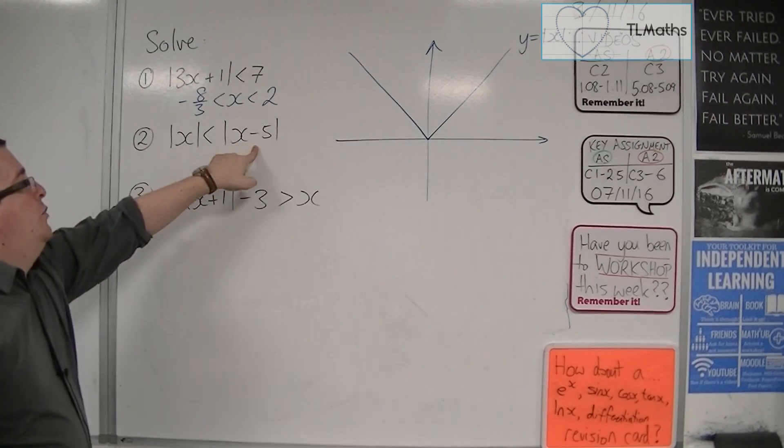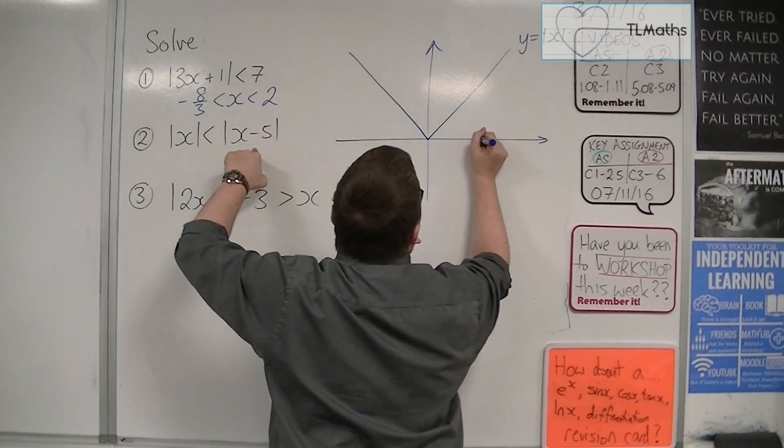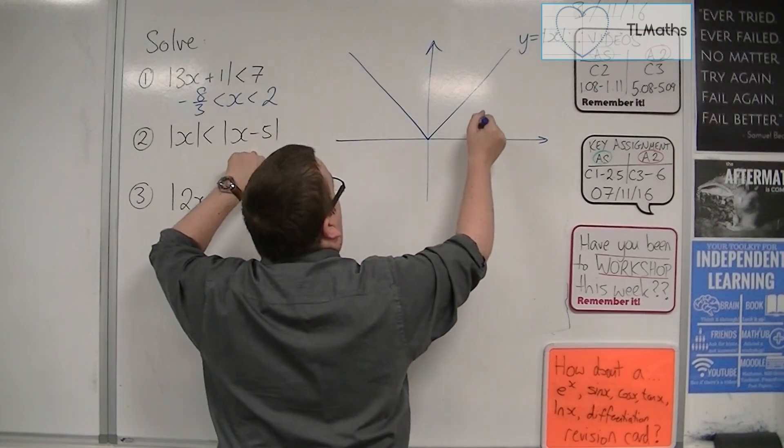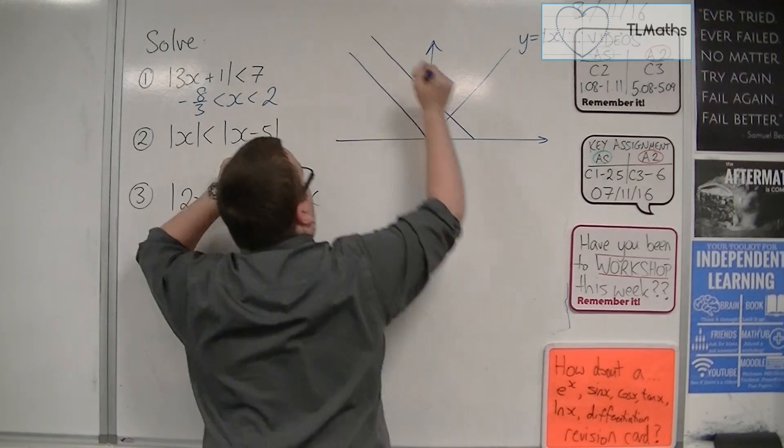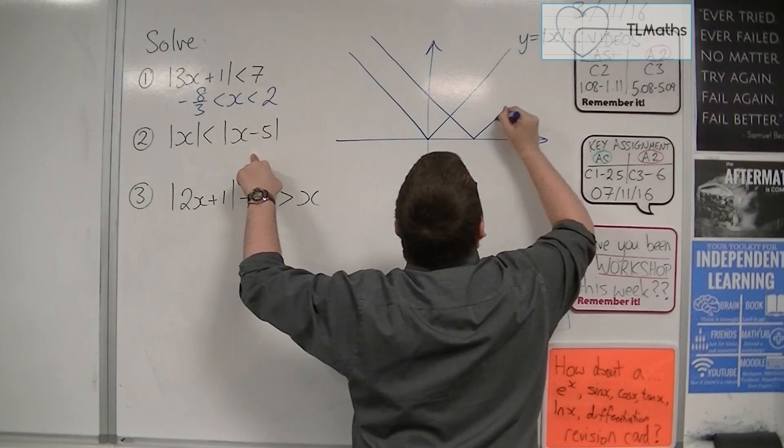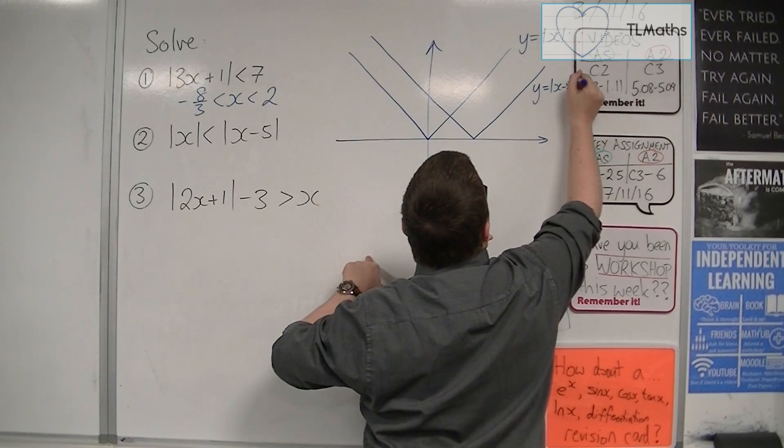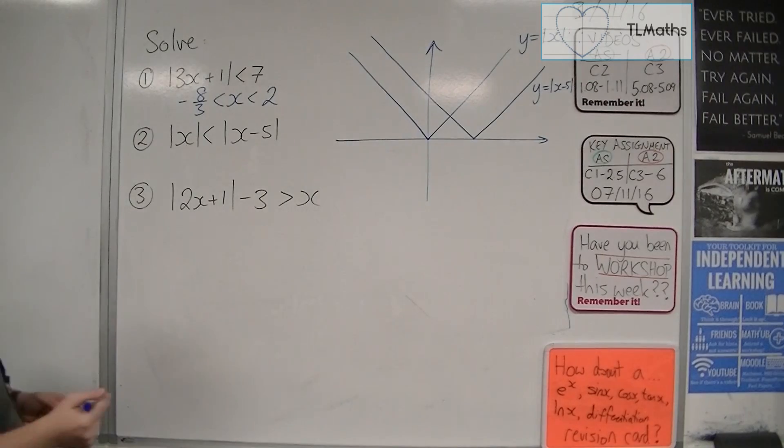Now, y equals modulus of x minus 5. That's going to hit the x-axis at 5. So along here. And it's going to have the same gradient as the y equals mod x. So it's going to be these two parallel lines. That's 5.